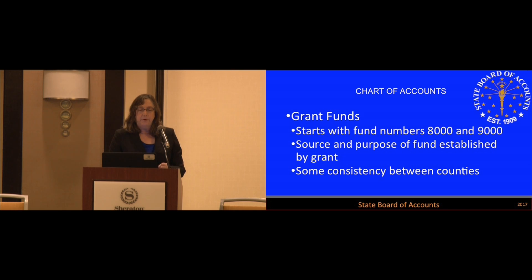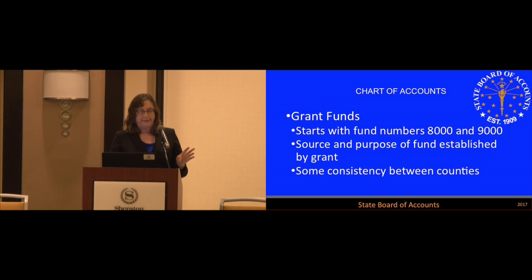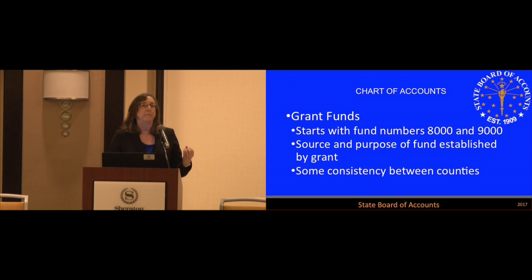Grant funds: those are 8,000 for federal grants and 9,000 for state and local grants. The source and purpose of those funds are established by your grant, so you always need to get a copy of your grant agreements so you know what to do with those funds. I try as much as possible to make sure departments understand they've got to get a copy of that grant agreement into the auditor's office — they cannot disperse those funds if they don't know how to disperse them, so those grant agreements are really important.